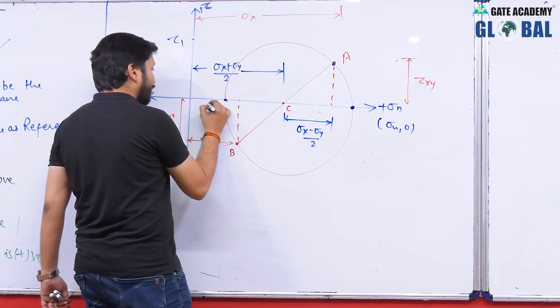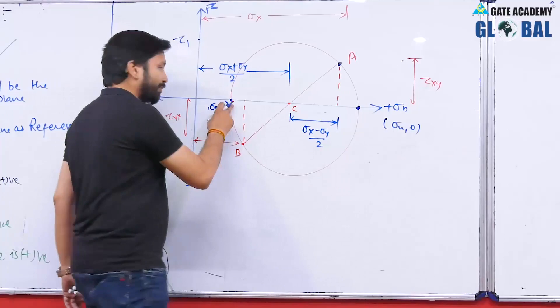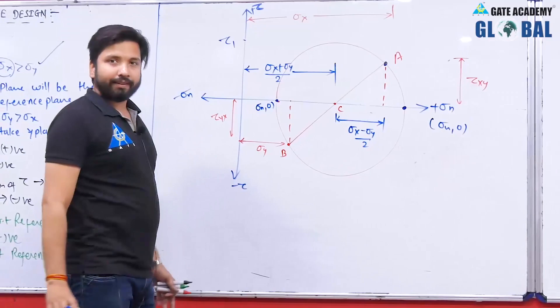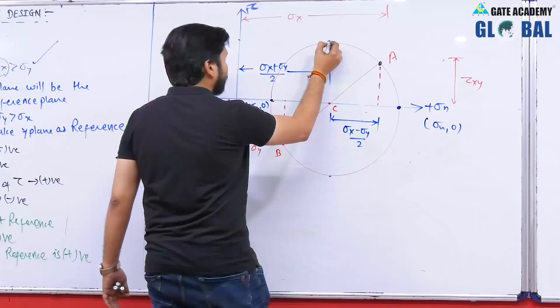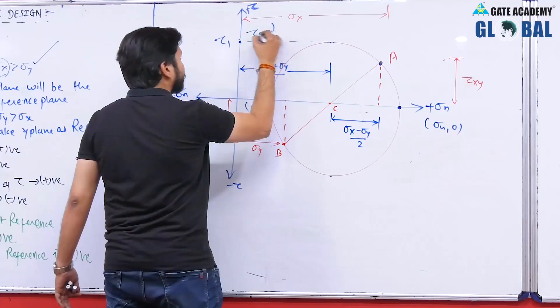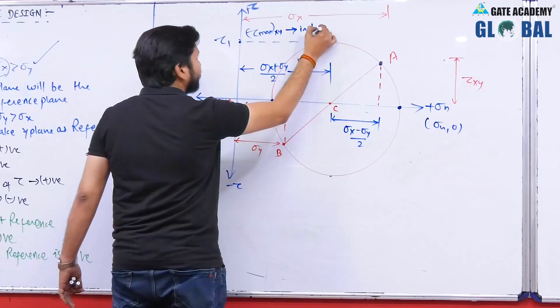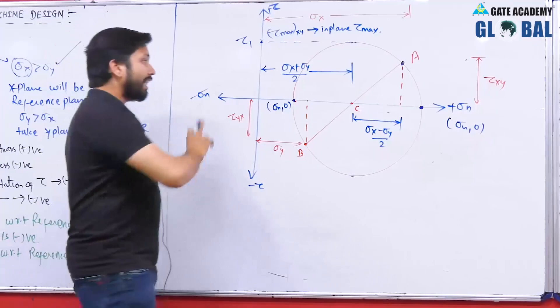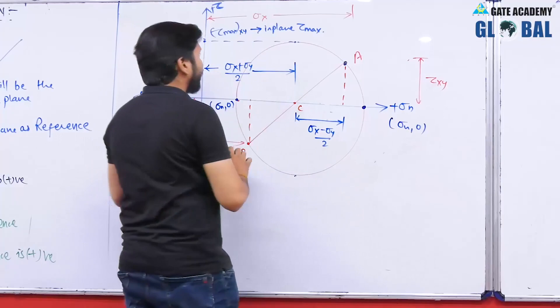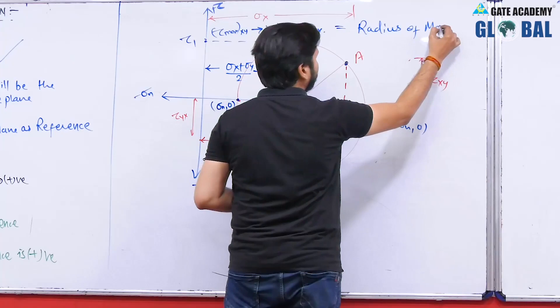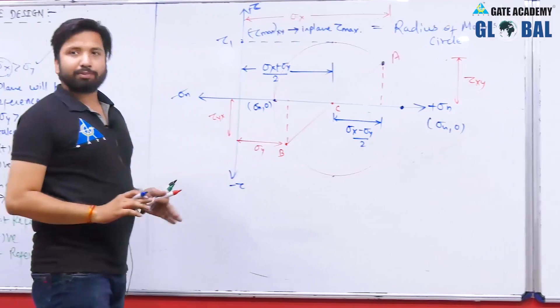There are two points on the sigma n axis: one represents the first principal plane and the other represents the second principal plane, each with their respective principal stress values. The topmost and bottommost points of the Mohr's circle give the in-plane maximum shear stress, tau max (xy). This maximum in-plane shear stress is equal to the radius of the Mohr's circle.